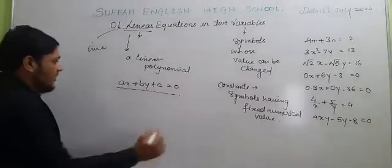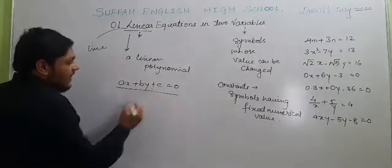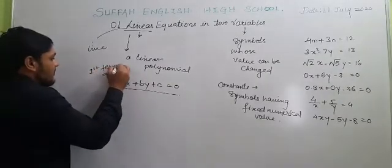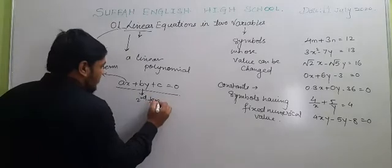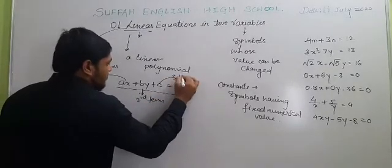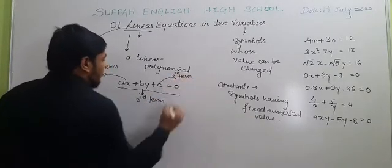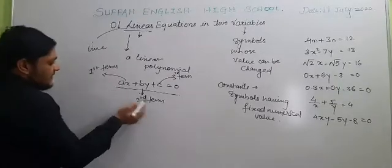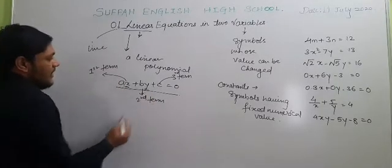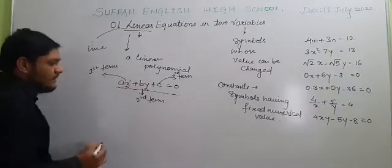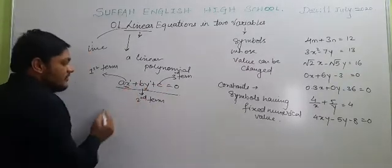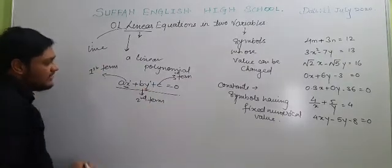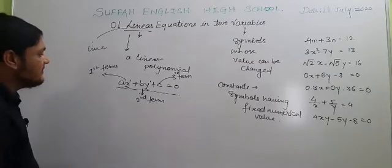If you observe this standard form, x and y are the variables. Ax is the first term, By is the second term, and C is the third term. The first and second terms contain variables, and each variable has degree 1 — the power of x is 1 and the power of y is also 1. That is why this equation is called a linear equation.